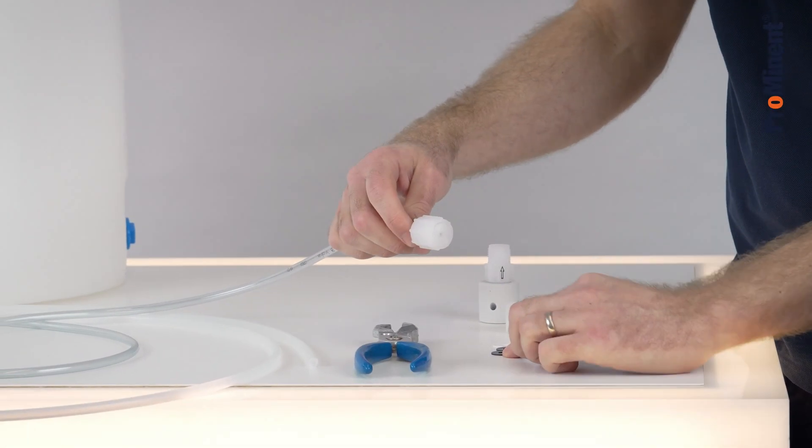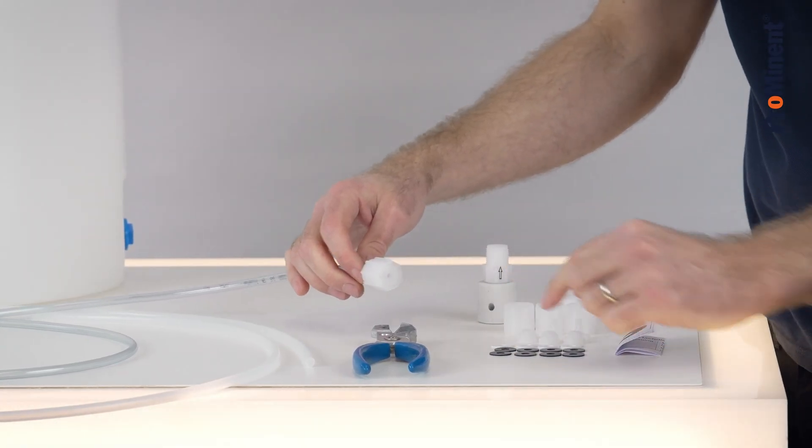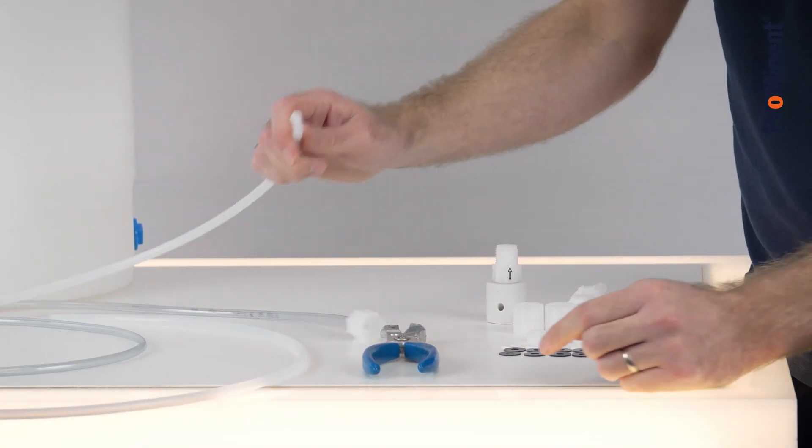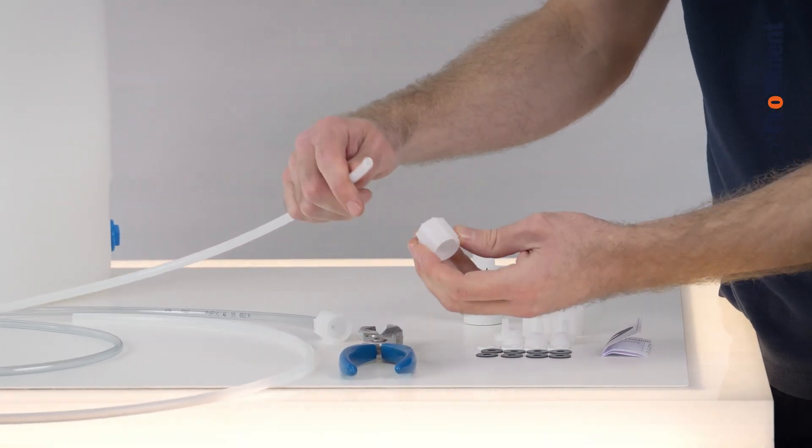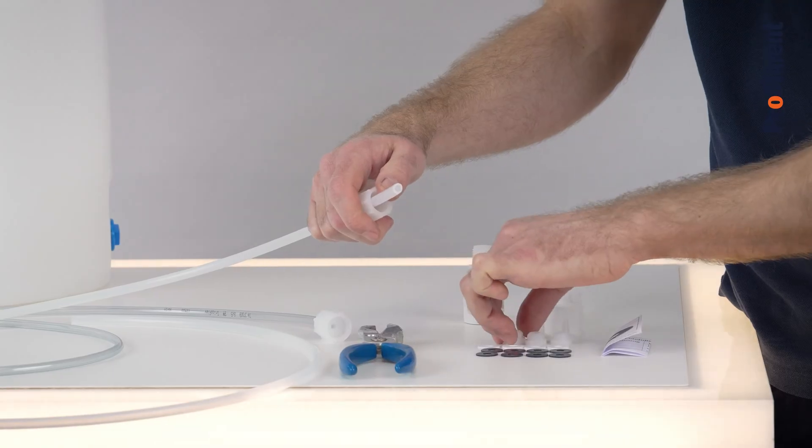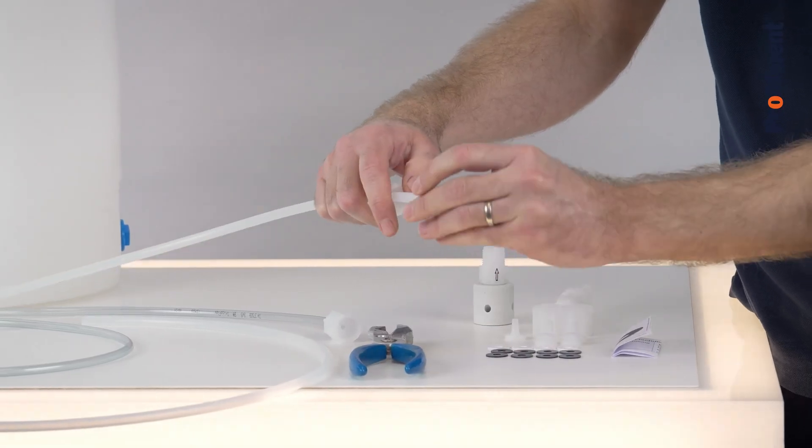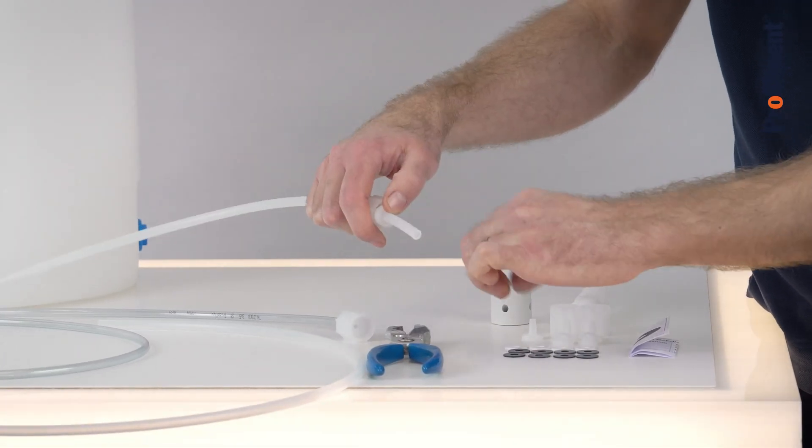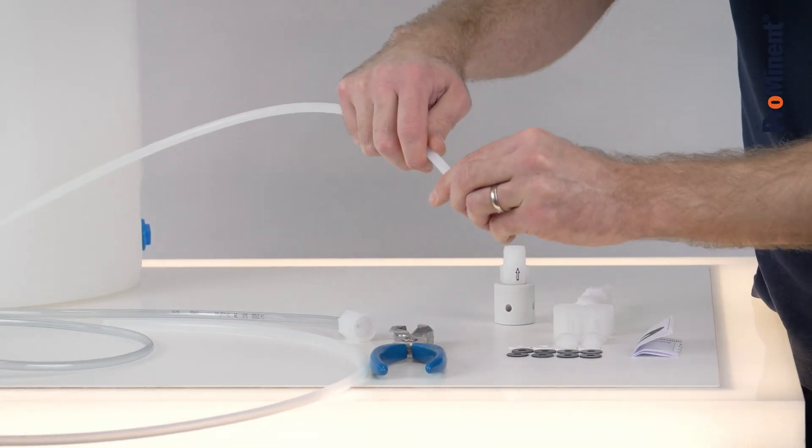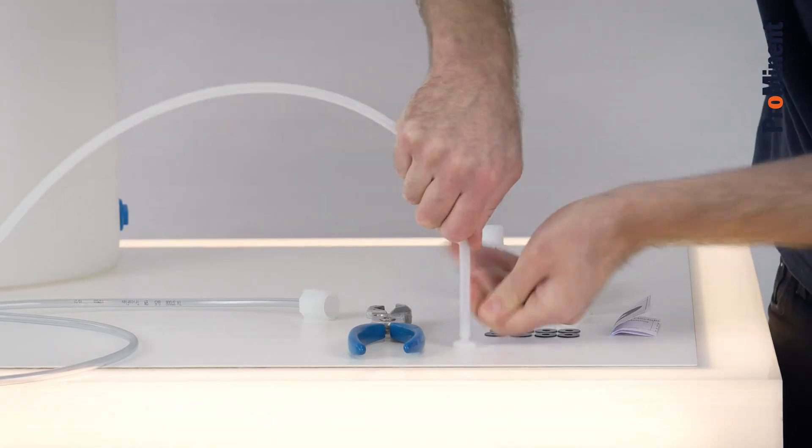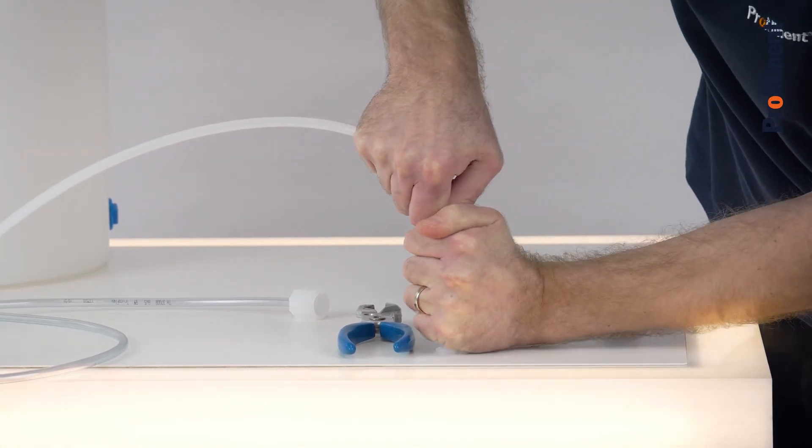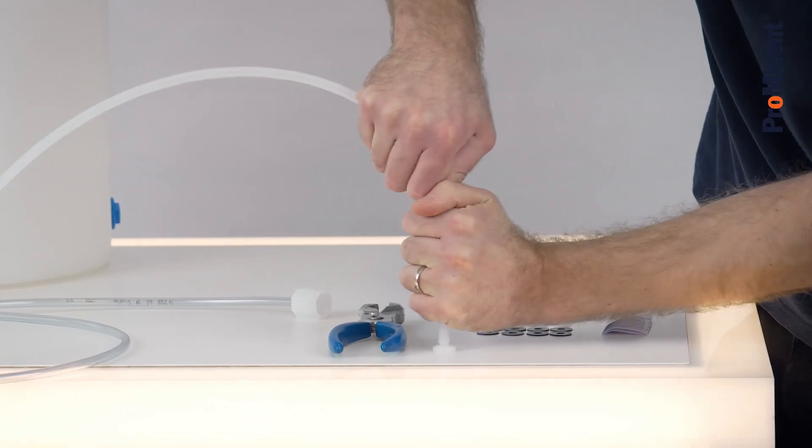When we install it we need to select the proper sealing which is compatible with the medium. For the pressure side the PE hose is much harder. Same procedure - union nut, clamp ring, and then the nozzle. Push it in properly. You need a bit of power.